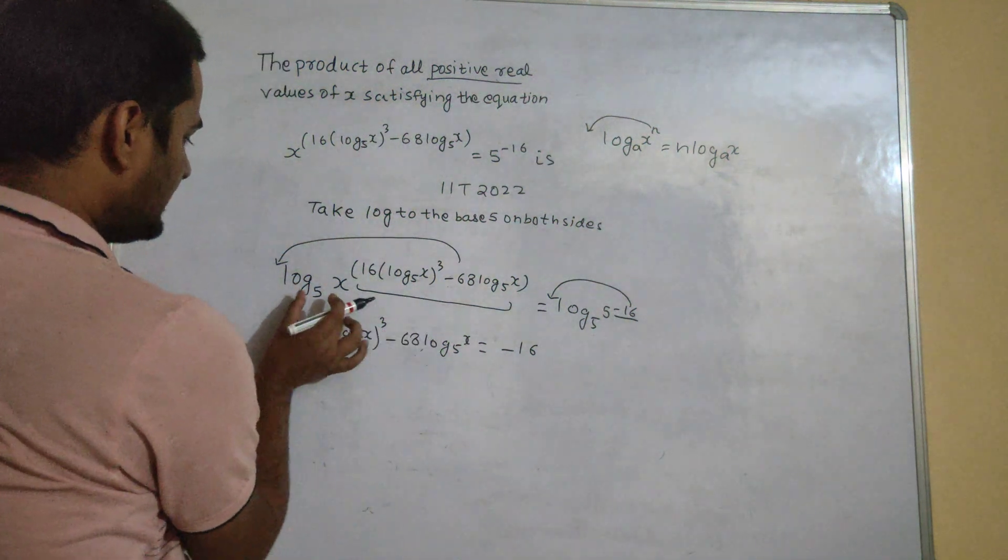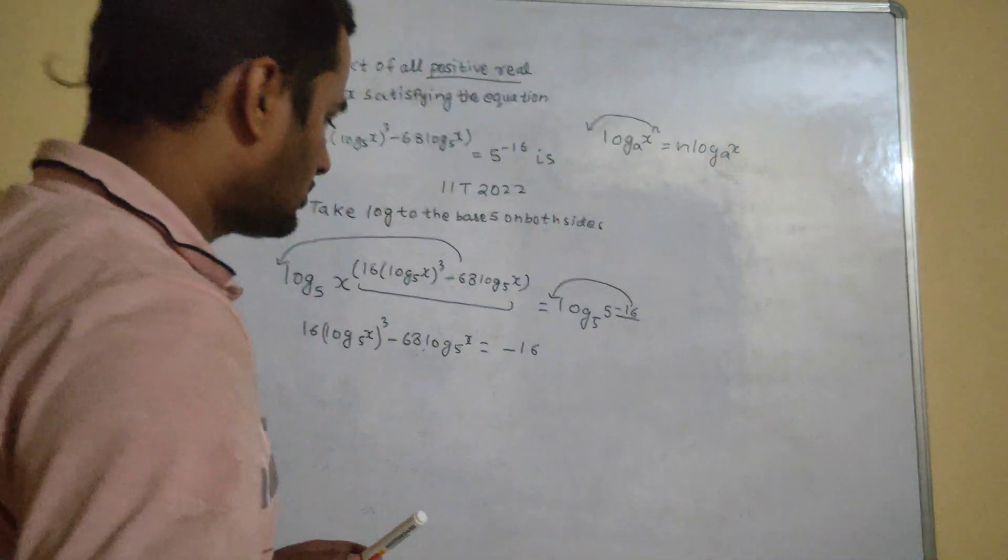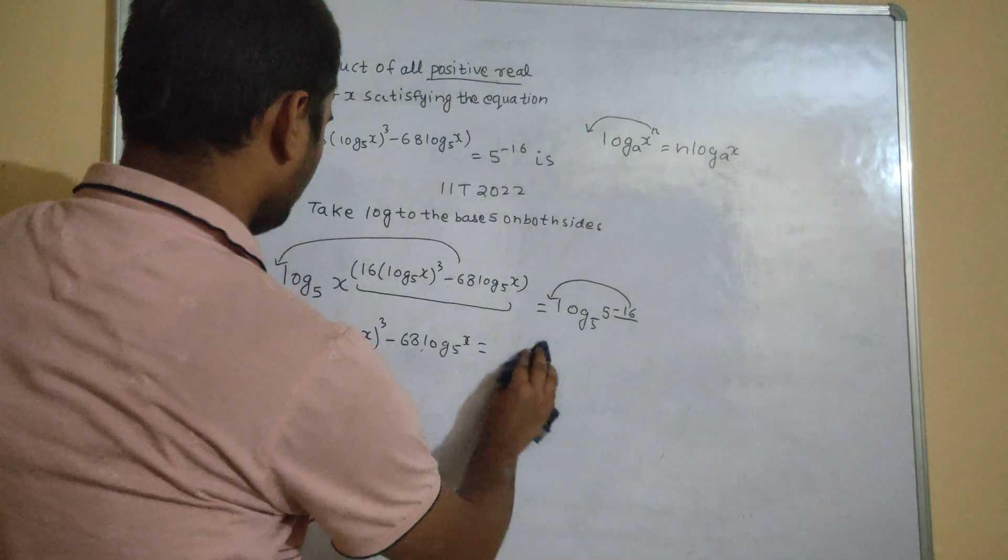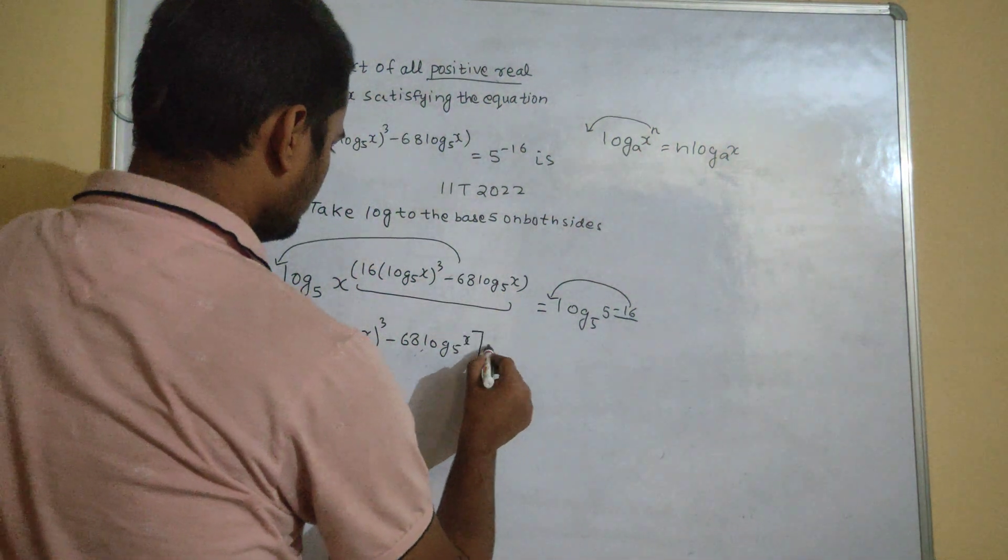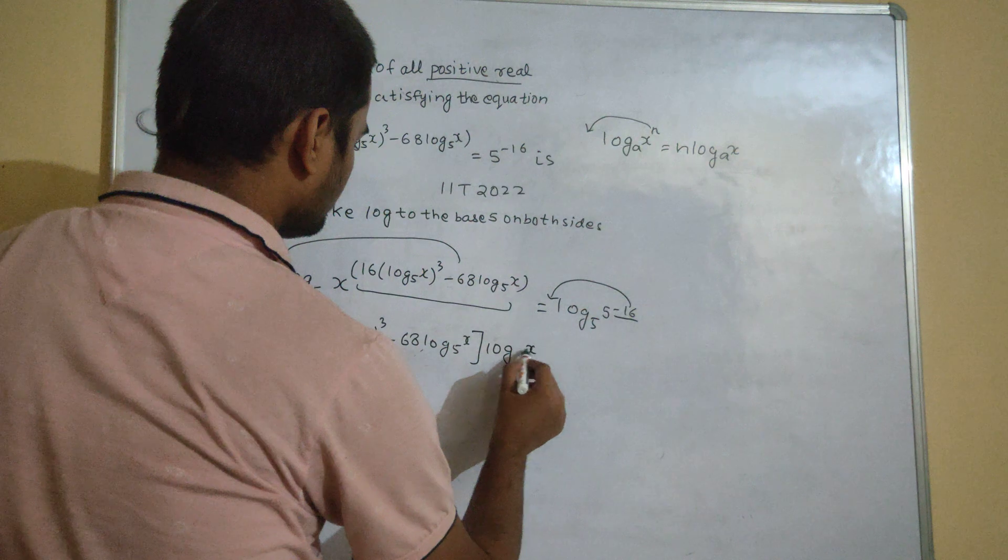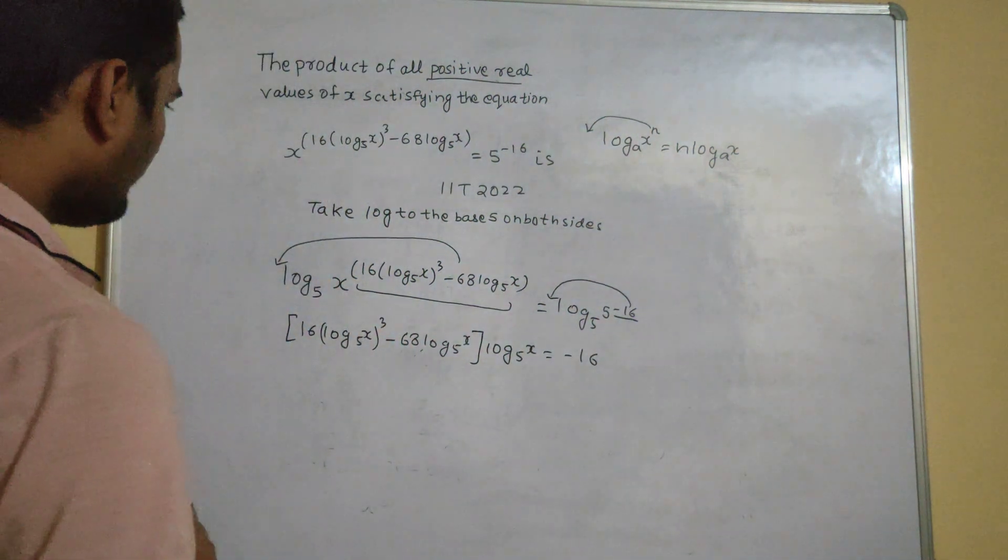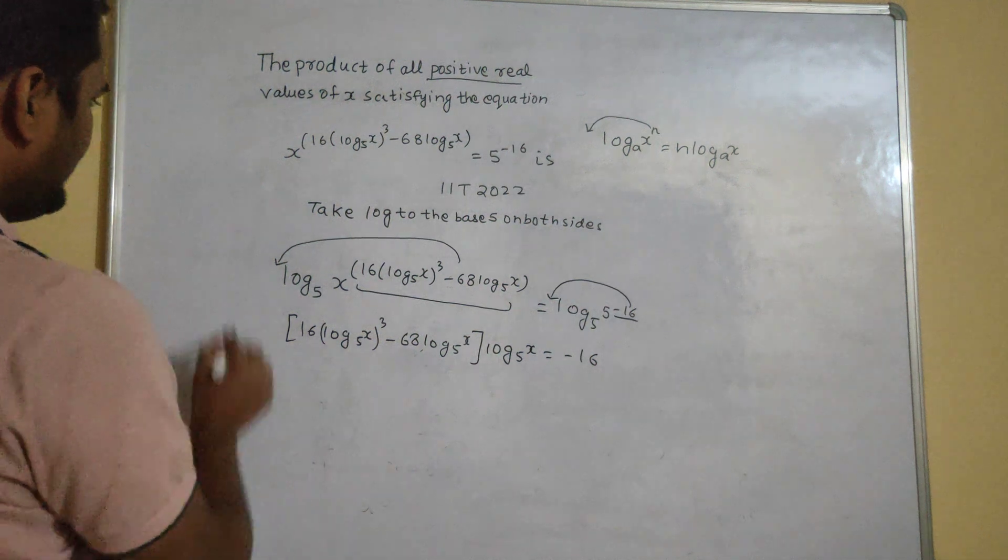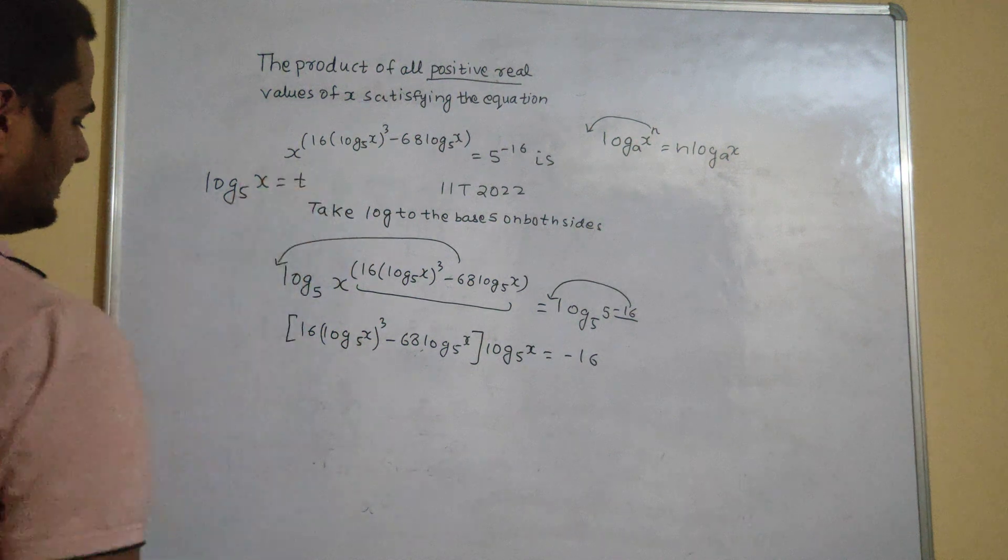With this, I have this log x to the base 5 also. So let's write that also. Now we are in a situation to take log x to the base 5 as some other variable, let's say t.